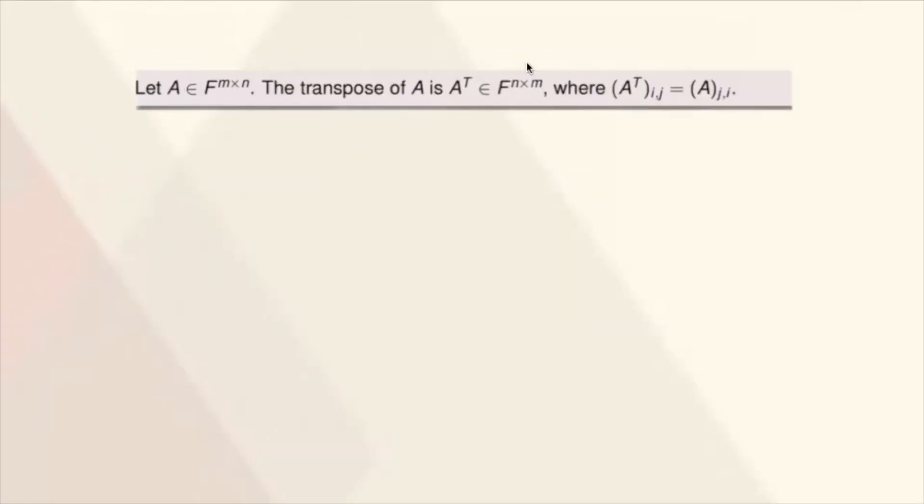What do we mean by a transpose? So given that you have a matrix A here, so your size of a matrix is M by N. So the transpose of A is denoted by this symbol. And if you can see, this is a matrix which is an element of the set of matrices of size N by M, where the entries of the transpose, the IJ entries is actually the JI entry of the original matrix.